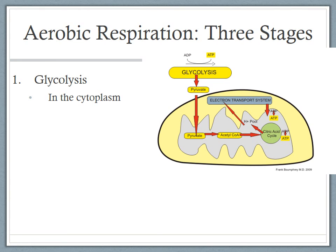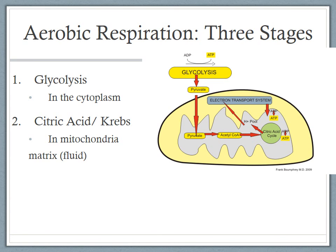Glycolysis takes place in the cytoplasm of the cell, not inside the mitochondria. Glycolysis is the beginning of cellular respiration — the breaking down of glucose. Once glucose has been broken down into pyruvates, those pyruvates will move into the mitochondria and into the matrix, where they will go through the citric acid cycle, also called the Krebs cycle. Both names refer to the same thing.